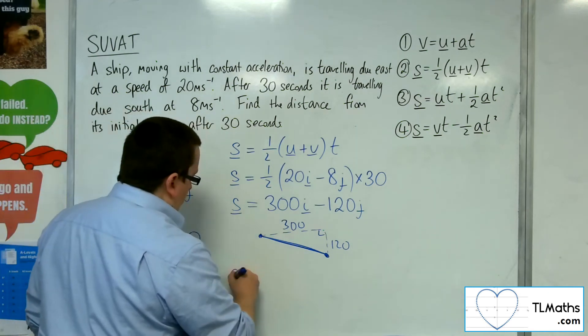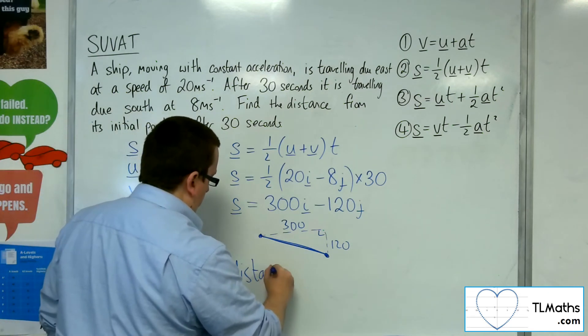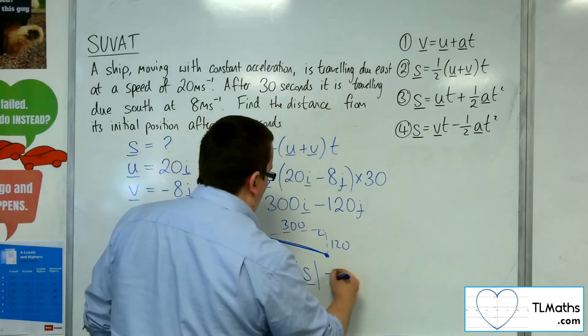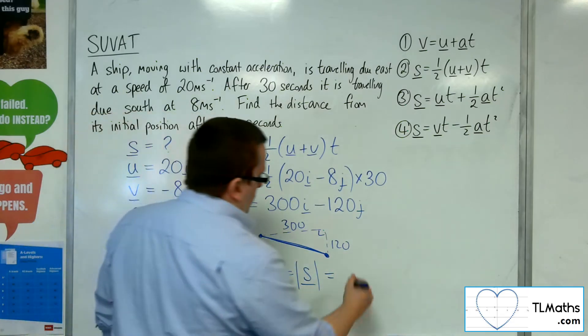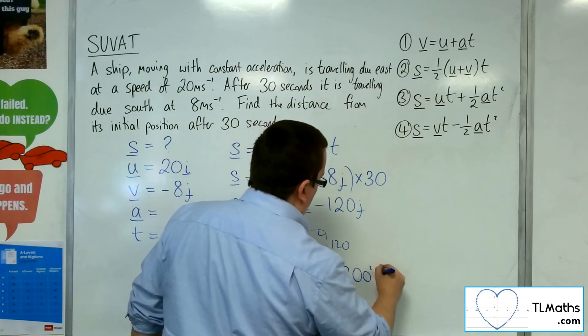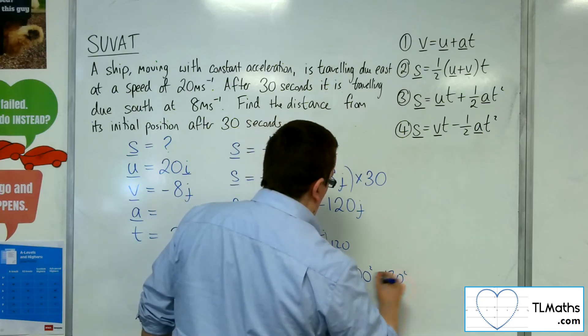The distance equals the modulus, the length of that vector, which using Pythagoras is √(300² + 120²).